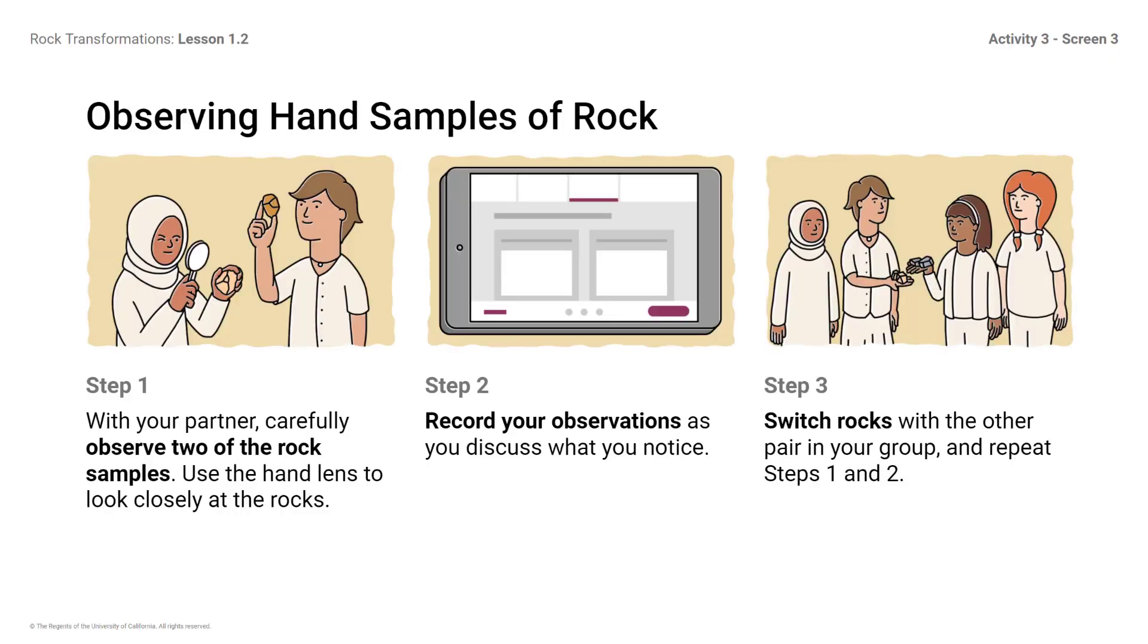Observing hand samples of rock. Step 1: With your partner, carefully observe two of the rock samples. Use the hand lens to look closely at the rocks. Step 2: Record your observations as you discuss what you notice. Step 3: Switch rocks with the other pair in your group and repeat steps 1 and 2.